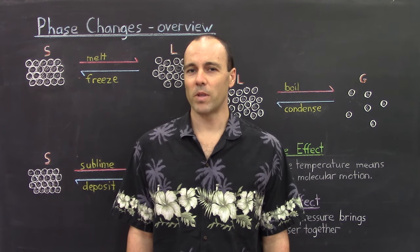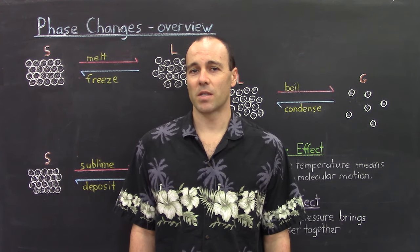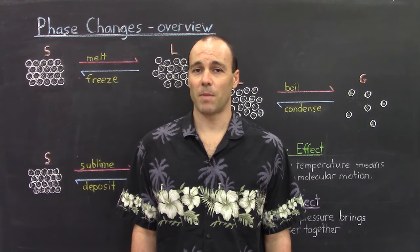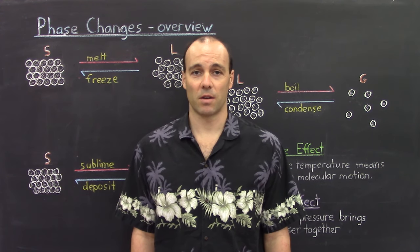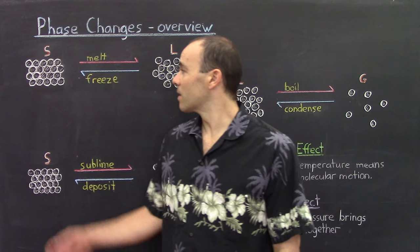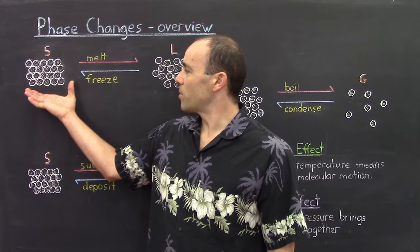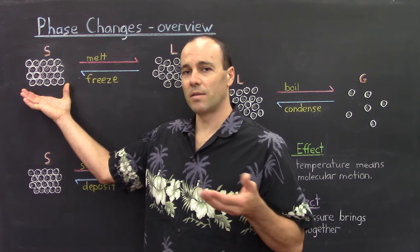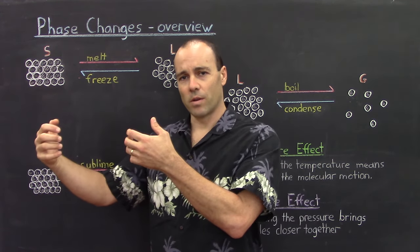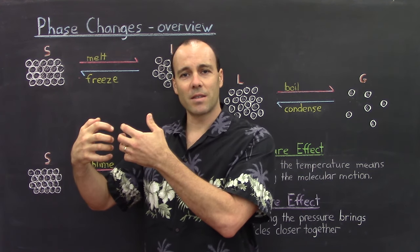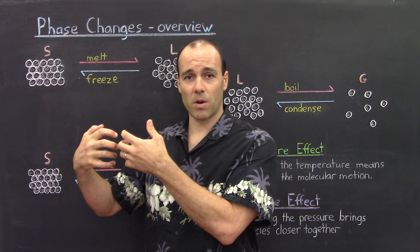But before we do that, let's first reiterate some of the basic knowledge that we've discussed regarding the three phases of matter, as well as the six possible phase transitions that can occur. Here is a representation of some generic solid. And in a solid, the particles are nicely ordered, and that's because they're held locked together because of the interaction forces that exist between the particles.